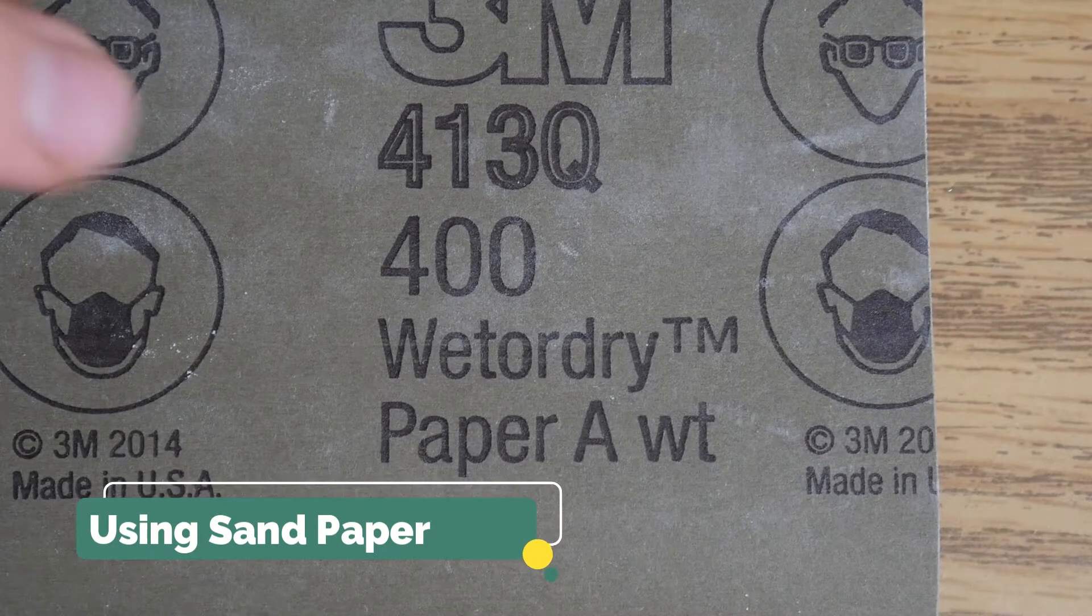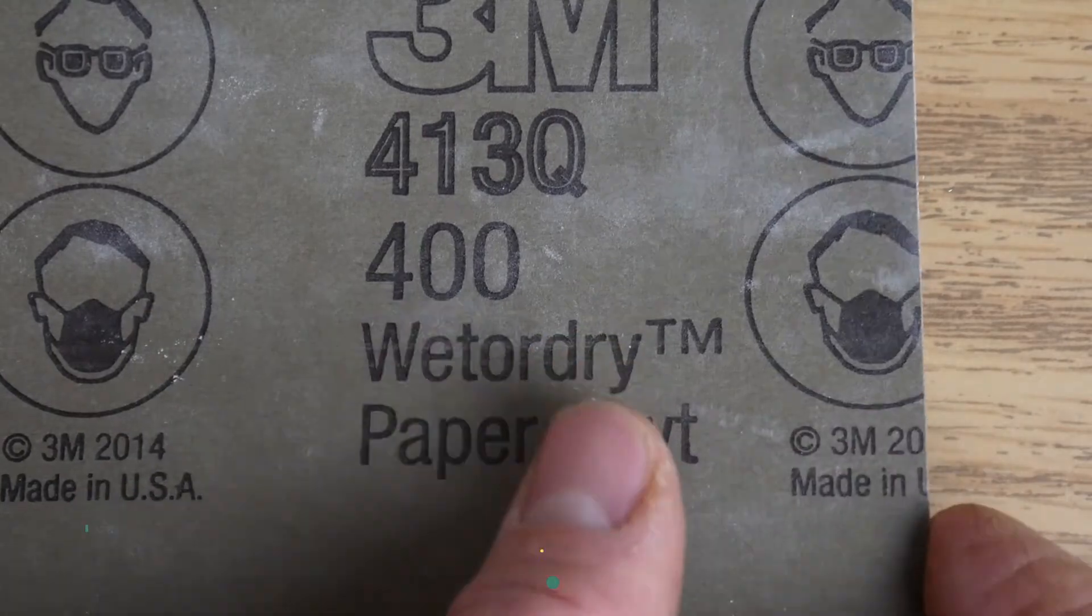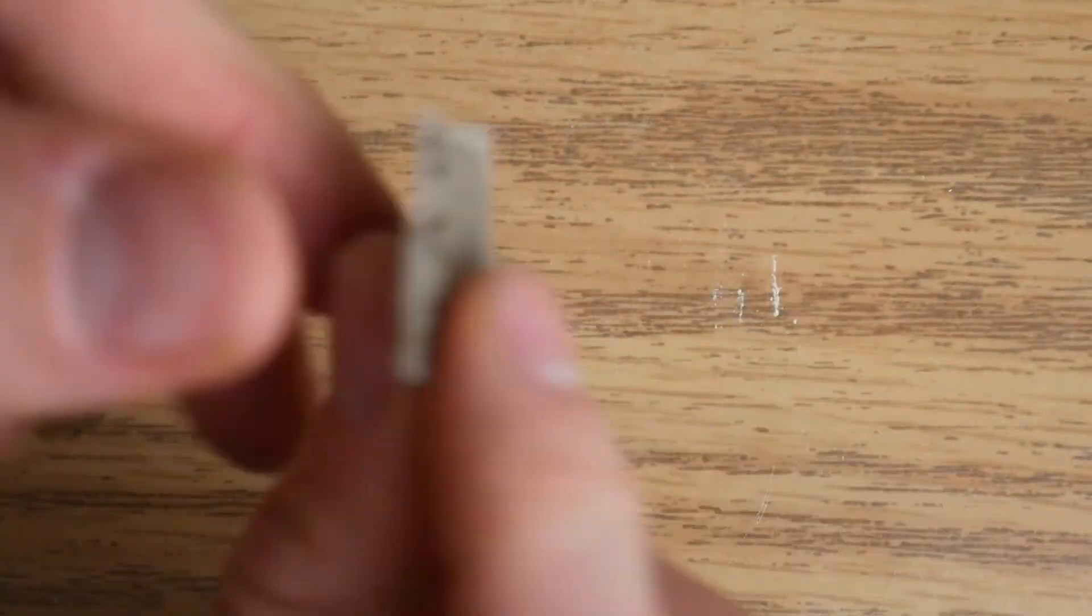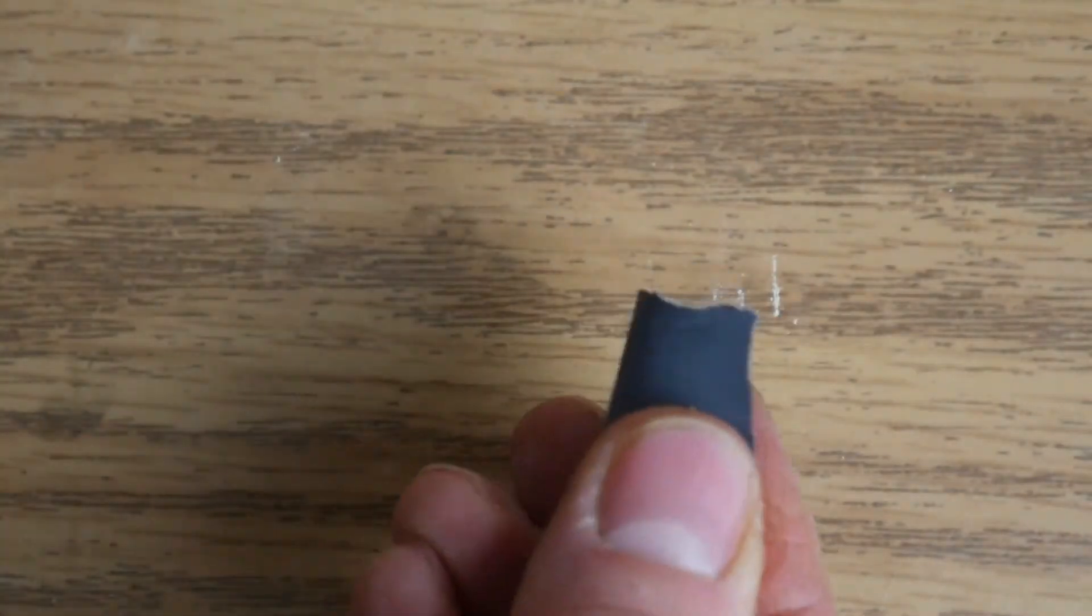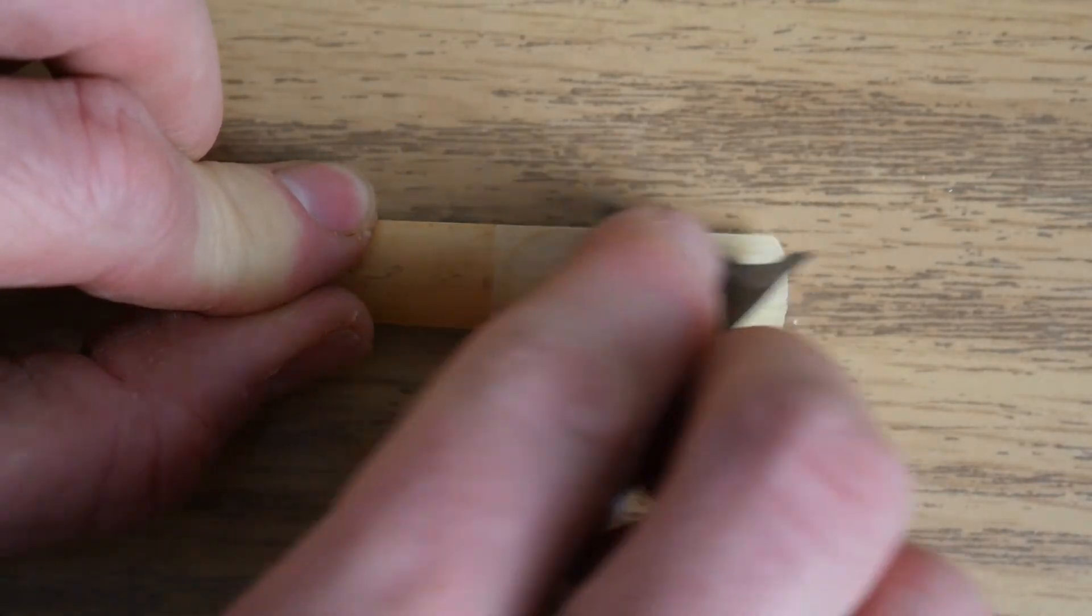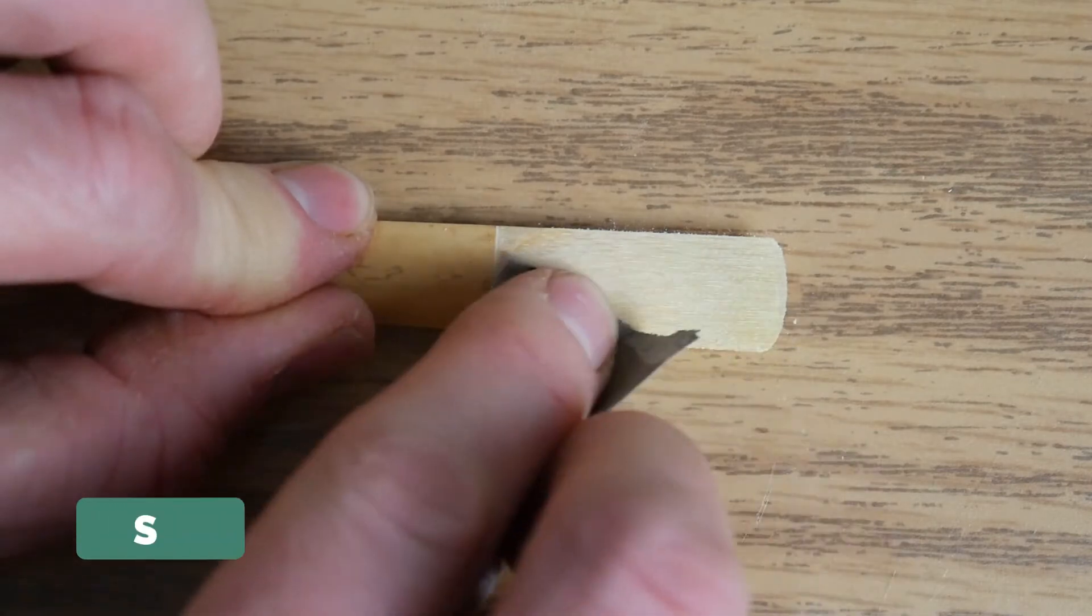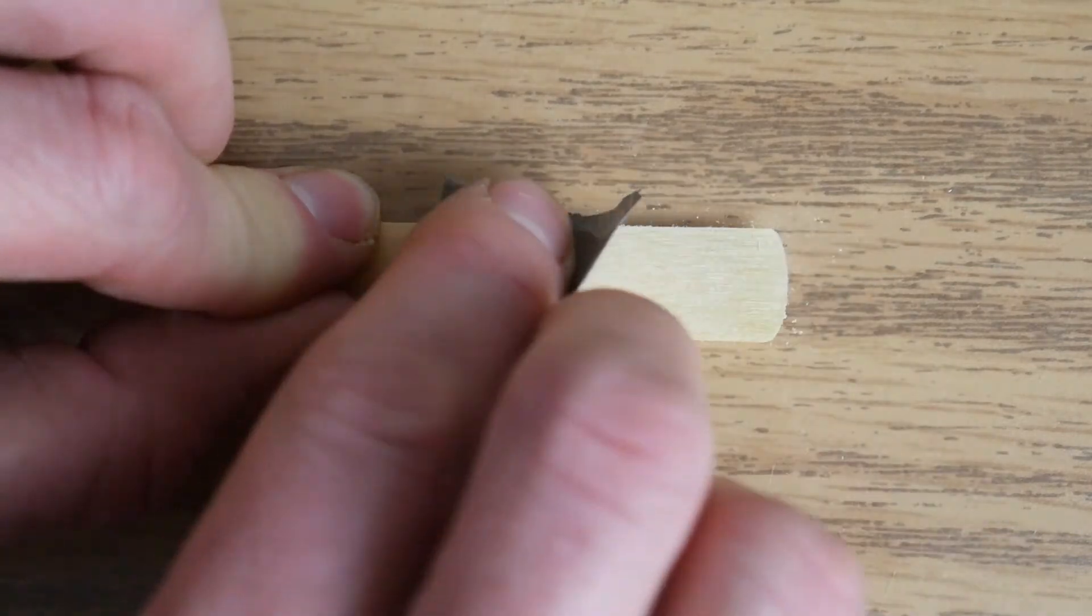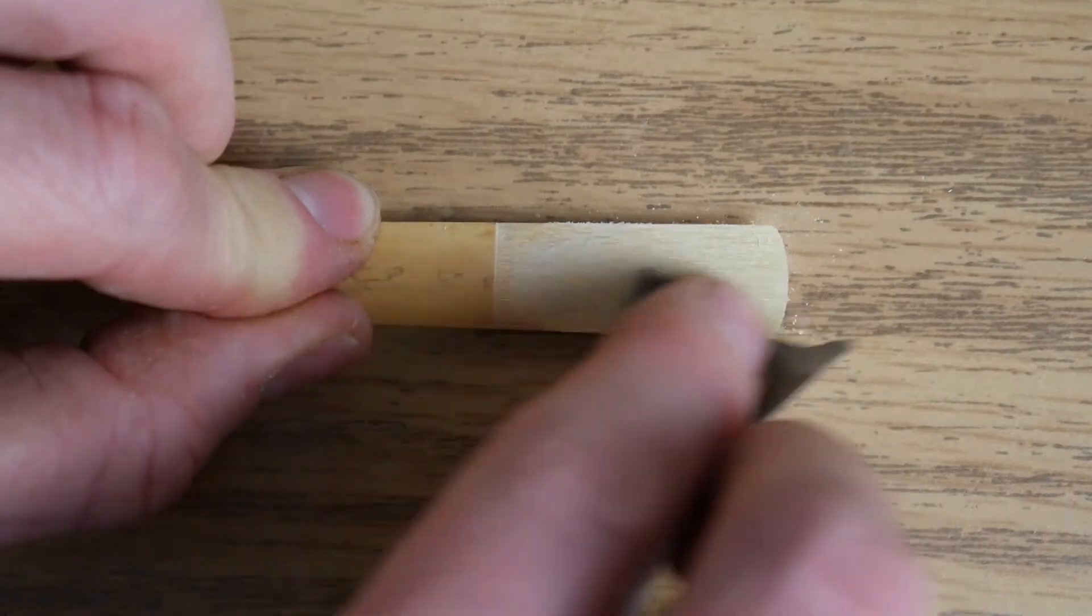If you don't have reed rush, you can also use 400 grit wet or dry sandpaper. I like to just tear off a small corner from a larger sheet, enough to wrap my index finger. This lets me precisely sand the vamp of the reed. Sandpaper can be more abrasive than reed rush, so be very gentle while sanding. The goal with sealing the vamp is to not take off any noticeable amount of wood.